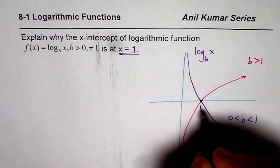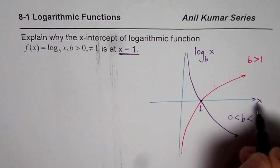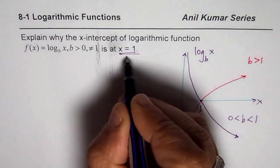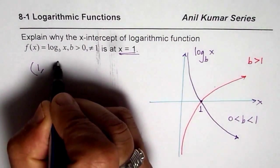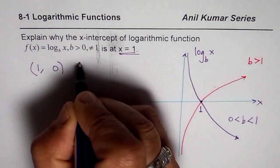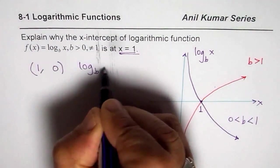Now, basically, if you see the coordinates of this point for our function, we are saying that the point is at x = 1, y value is 0. That is for log_b(x).